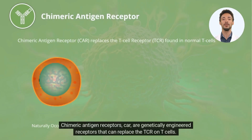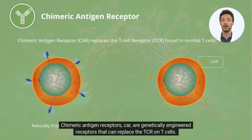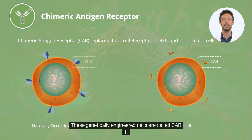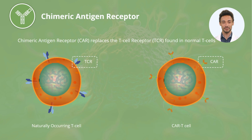Chimeric antigen receptors, or CAR, are genetically engineered receptors that can replace the TCR on T-cells. These genetically engineered cells are called CAR-T.